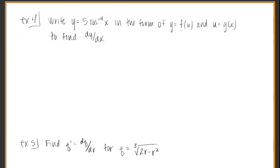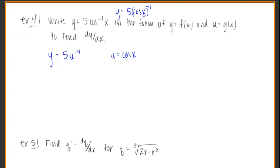Let's go to Example 4. We want to break y equals 5 cosine to the negative 4th of x into two parts, and then take the derivative. I let the exponent be my guide — I see that negative 4th power. So I'll say y equals 5u to the negative 4, and then what has that power of negative 4 is cosine x. Whether I write it as 5 cosine x to the negative 4 or put the negative 4 next to the cosine, it's not a power of x — it's a power of the cosine function. Same thing.